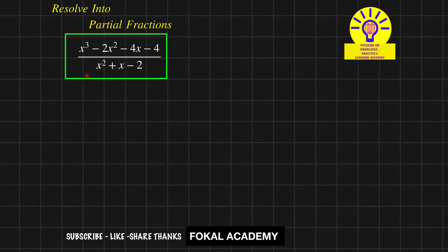In this problem, we resolve into partial fractions for the given function. Here the numerator degree is 3 and the denominator degree is 2, so the numerator degree is higher than the denominator. Because of this, direct partial fractions is not possible, so first we must divide the numerator by the denominator.